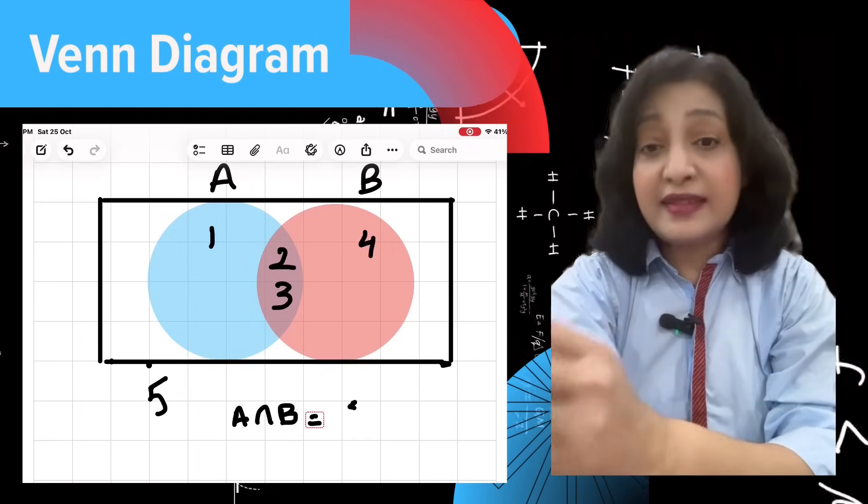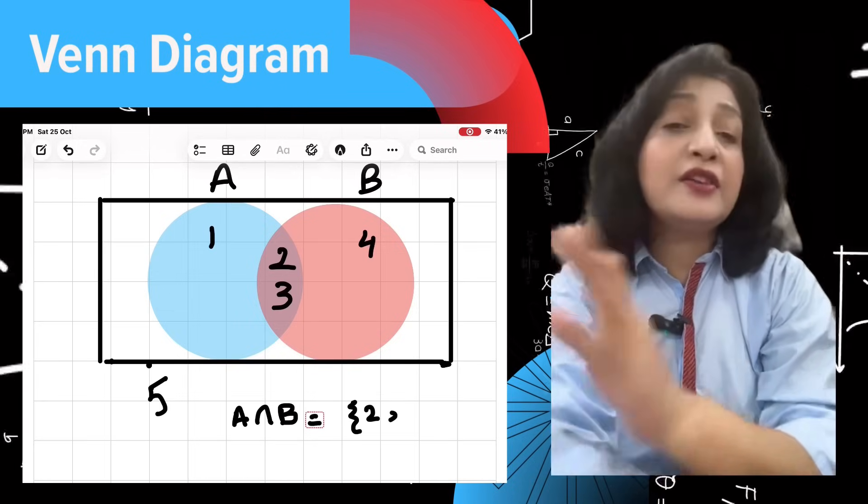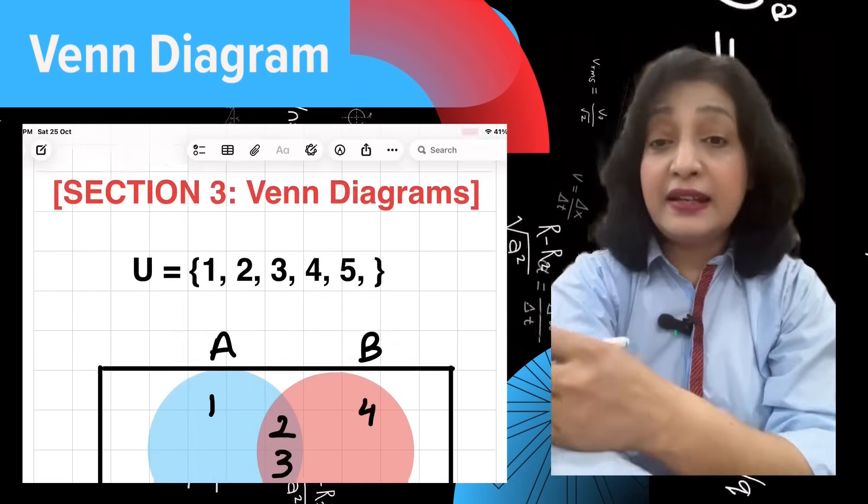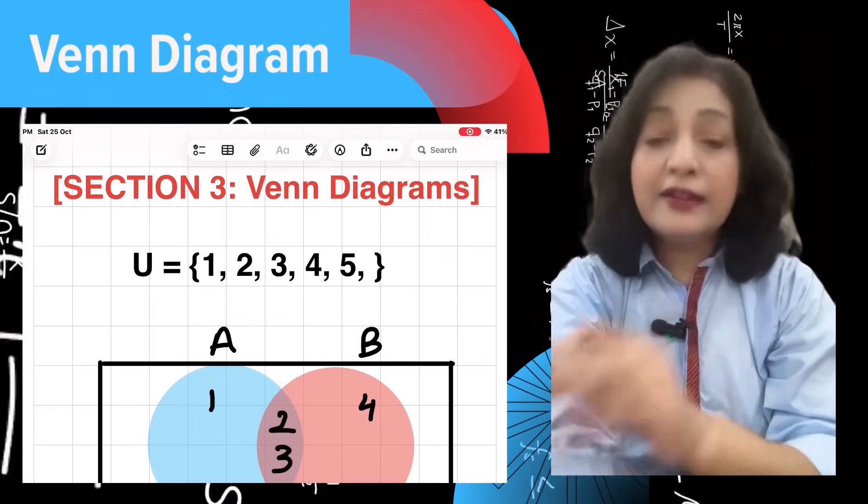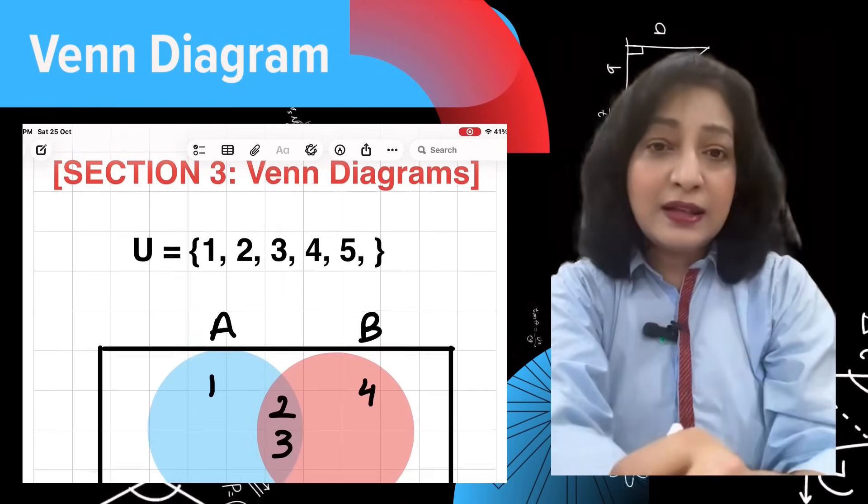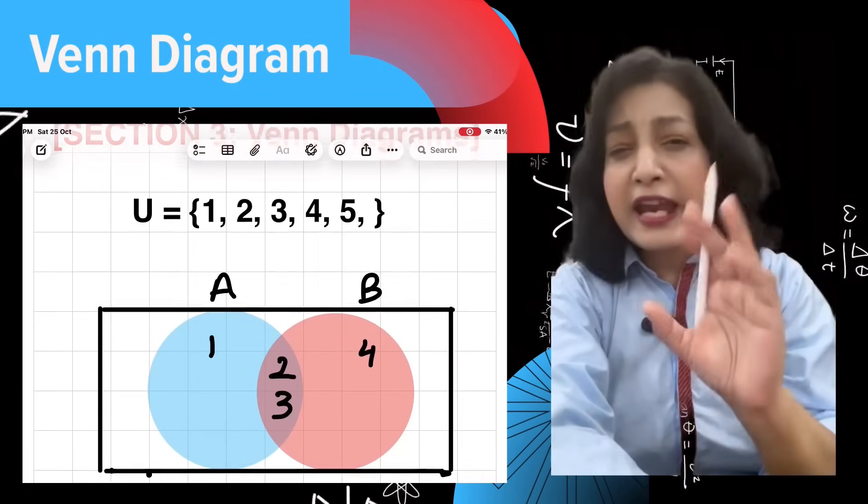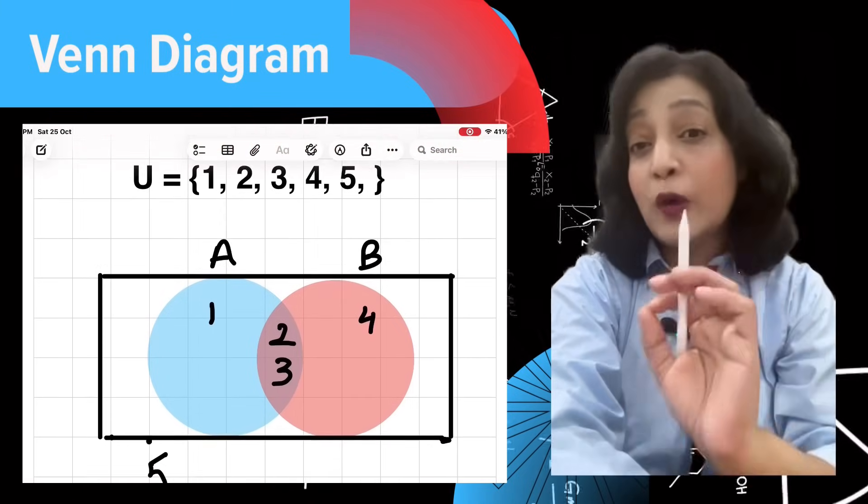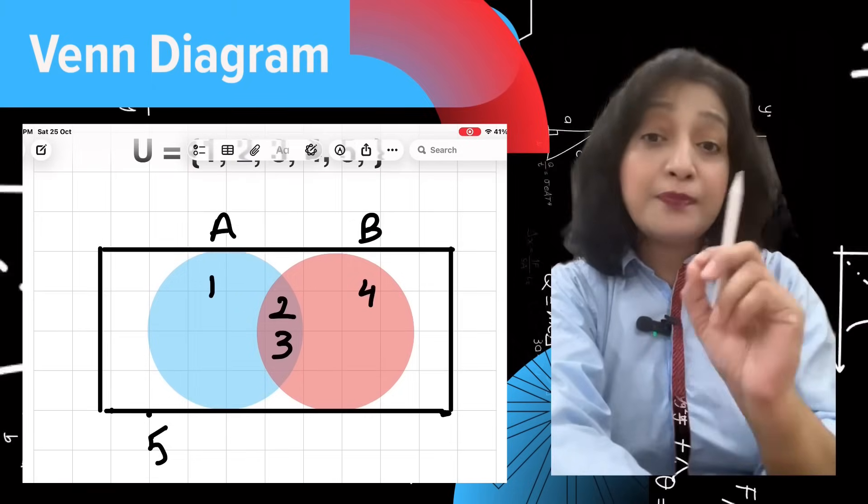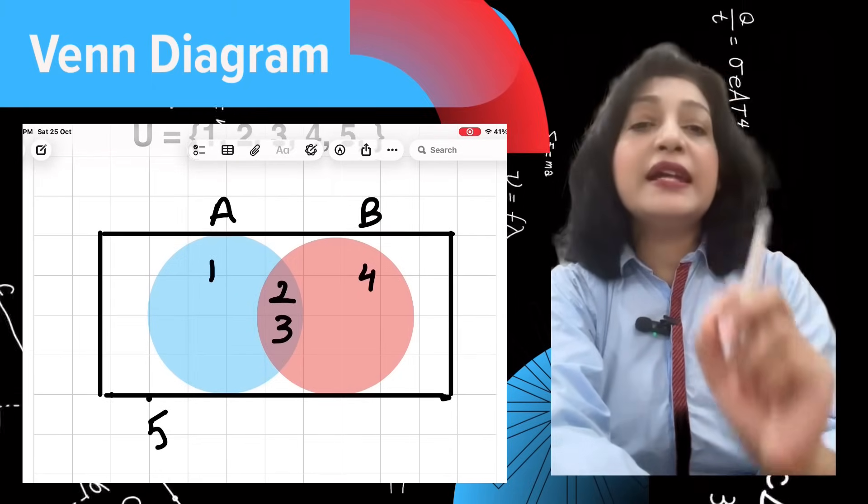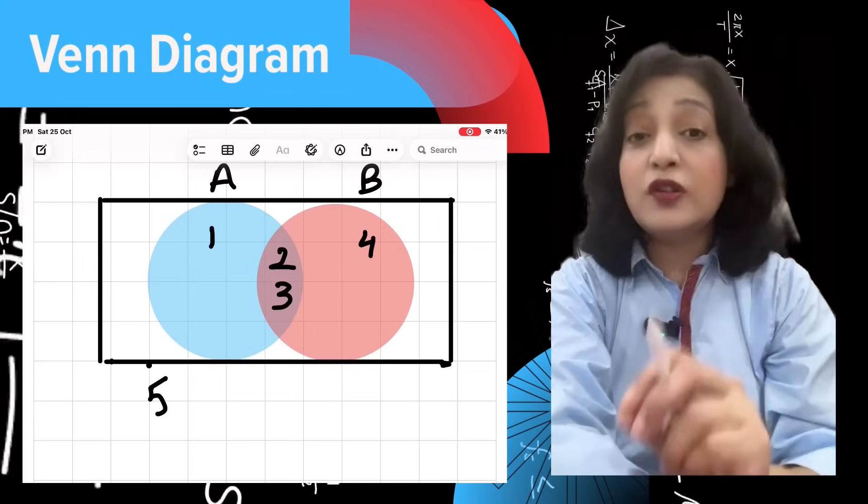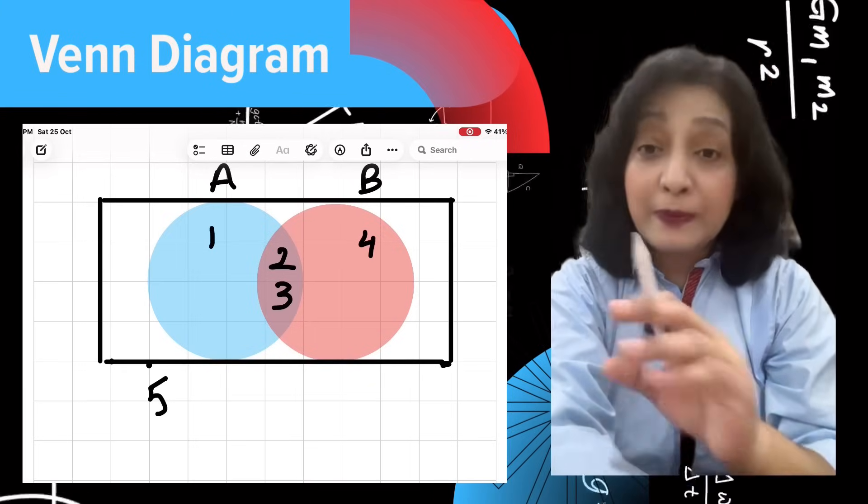The first circle is set A with elements {1, 2, 3}, and the second is set B with {2, 3, 4}. Look at the screen: the overlap is where A and B share elements, 2 and 3. The number 5 is outside both circles but inside U, because it's in the universal set but not in A or B.